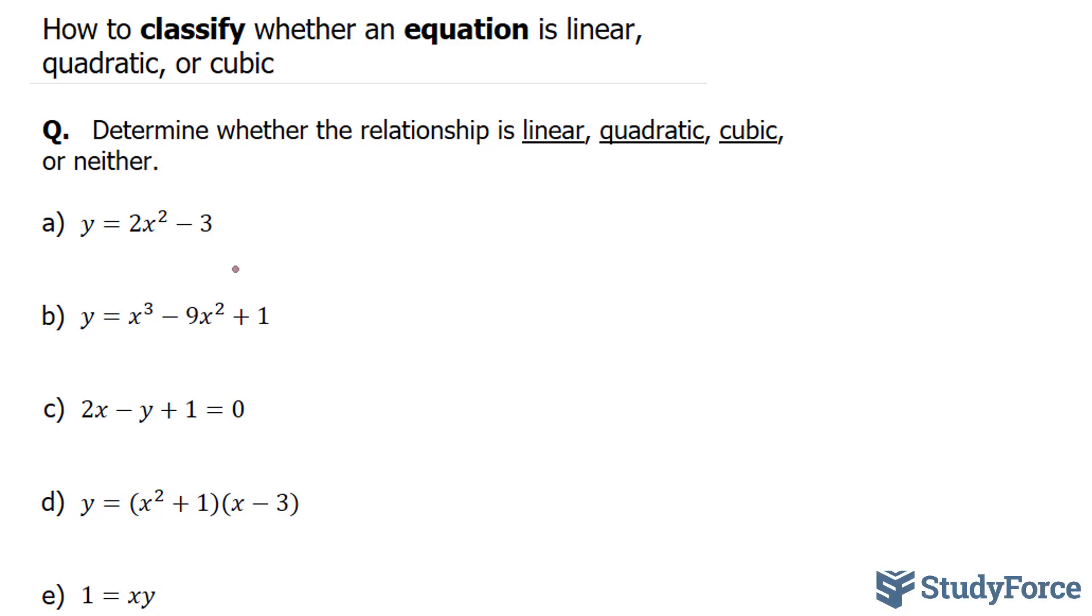Moving on to c. This time, our independent variable x is coupled with the y on the same side. That doesn't change much. If we were to bring this y over, we would end up with an equation that looks linear. You have 2 times x. x has an exponent of 1, therefore this is linear.